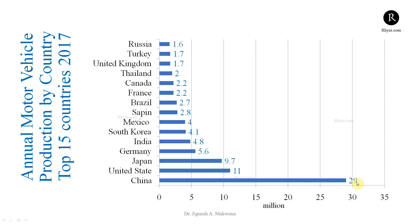China is leading with 29 million; the US is at 11 million in 2017. Next is Japan, then Germany. India is fifth with 4.8 million vehicles manufactured in 2017 — interesting because India's per capita is only 18% yet it ranks fifth worldwide in manufacturing. Then Korea, Mexico, Spain, Brazil, France, Canada, Thailand, UK, Turkey, and Russia complete the top 15 countries that manufactured motor vehicles. This is data from 2017.